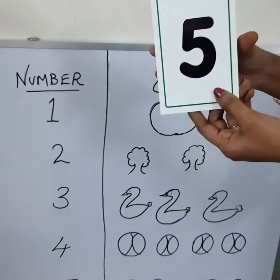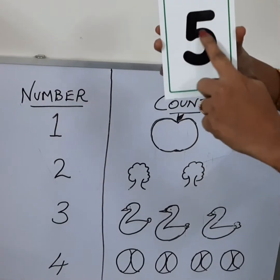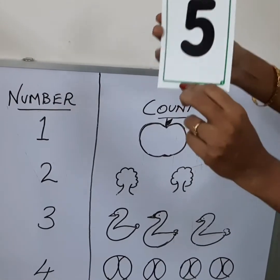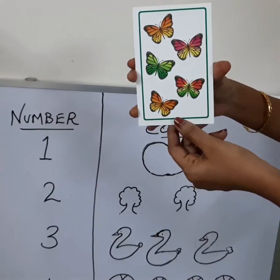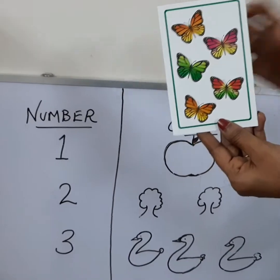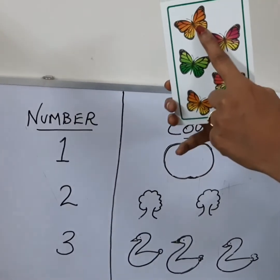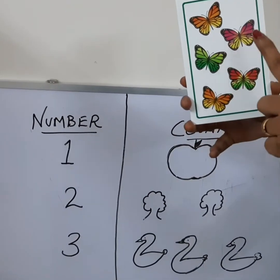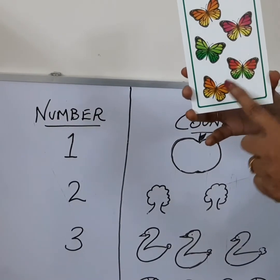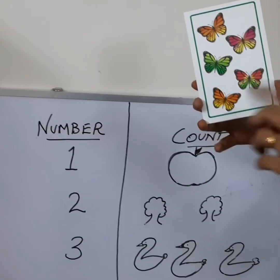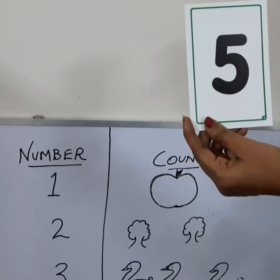Next one is 5. Number 5. Okay? What are these? Yes! Butterflies. Colorful butterflies. We will count now. 1, 2, 3, 4, 5. 5 butterflies here. This is number 5.